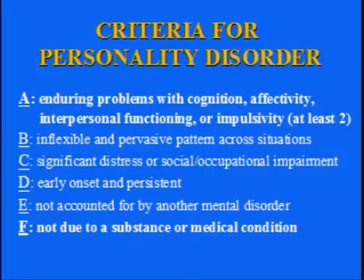Shifting to our second C, which is complexity. This is the overarching list of criteria for all personality disorders, not just borderline. The first slide we had is the specific symptom list for borderline personality disorder. This is what defines a personality disorder, or what DSM-IV calls an Axis II disorder. I do have a reason for putting this up here other than to fill time.